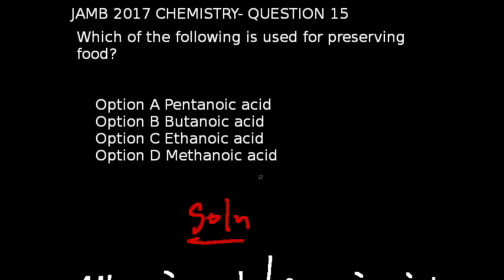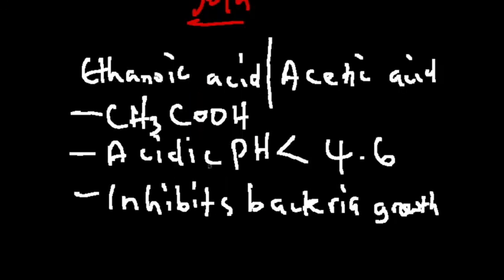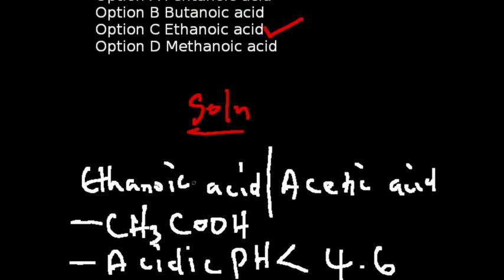Question 15 of the JAMB 2017 chemistry exams: Which of the following is used for preserving food? We are given four options here. The correct answer to this question is option C, which is ethanoic acid. Let's quickly look at how ethanoic acid is used in preserving our food.